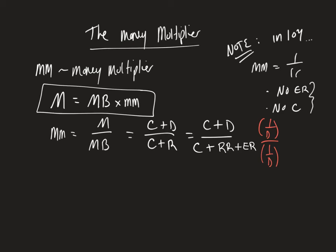So what that means, if I bring this down here, is the money multiplier is now going to equal C over D plus D over D divided by C over D plus RR over D plus ER over D.